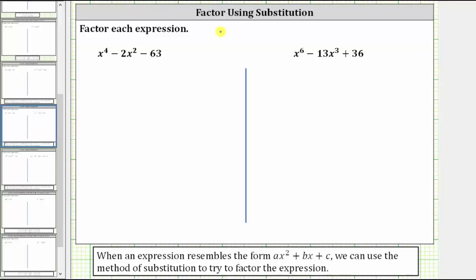In this video, we will look at two examples of factoring using substitution. When an expression resembles the form ax squared plus bx plus c, we can use the method of substitution to try to factor the expression. The variable factor of the middle term is x, and if we square x, we get the variable factor of the first term, which is x squared. The expression needs to fit this form in order to use the method of substitution.